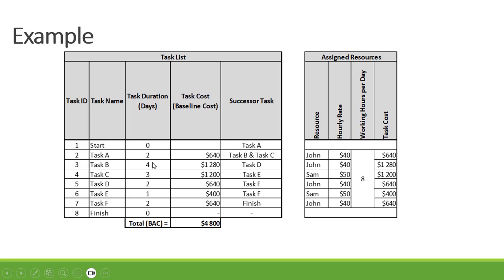John is also assigned to task B at $40 per hour, so it's 40 times 8 = 320, times 4 = $1,280. Sam is assigned to task C at $50 per hour, so 50 times 8 = 400, times 3 = $1,200. Then John is also assigned to task D, so it's 40 times 8 = 320, times 2 = $640.